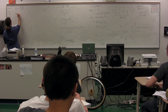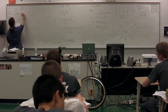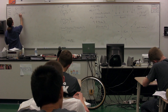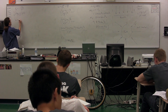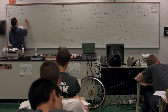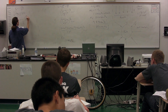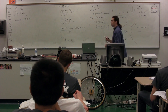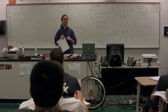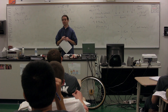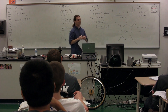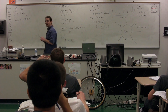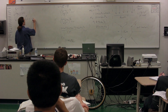Rearranging this equation, we get: the derivative of the gravitational potential energy equals the negative force of gravity with respect to r. We can take the integral of both sides. On the left-hand side, we get the change in gravitational potential energy is equal to the negative of the integral of the force of gravity with respect to position, from position initial to position final — otherwise known as work.